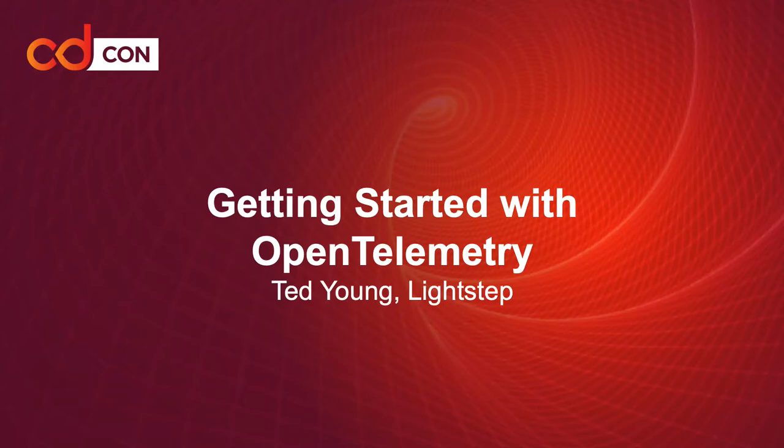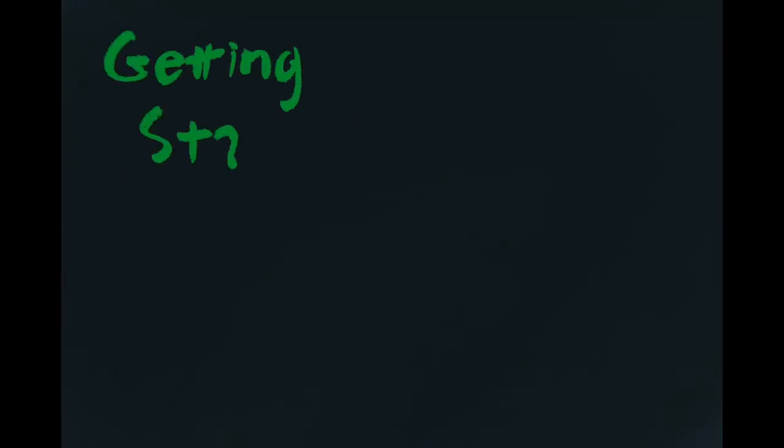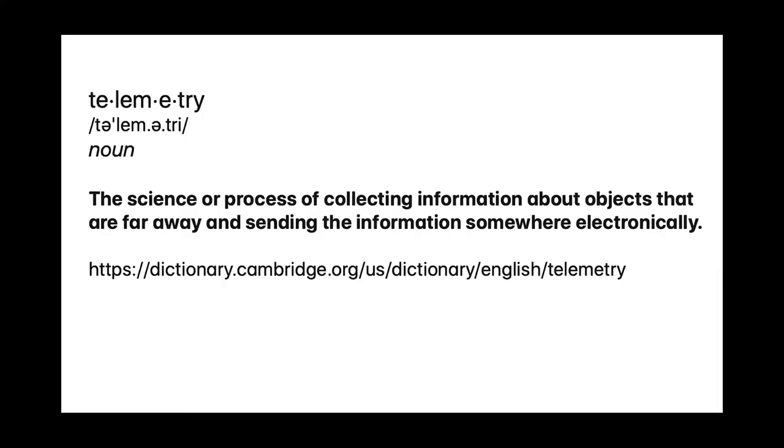Hi, my name is Ted Young and my pandemic haircut is a hat. Getting started with OpenTelemetry — but what even is OpenTelemetry? Come to think of it, what's telemetry? The Cambridge Dictionary defines telemetry as the science or process of collecting information about objects that are far away and sending the information somewhere electronically. OpenTelemetry is an observability platform, a set of well-factored components that can be used together or à la carte. OpenTelemetry collects a variety of observations: distributed tracing, metrics, and system resources being the most important.